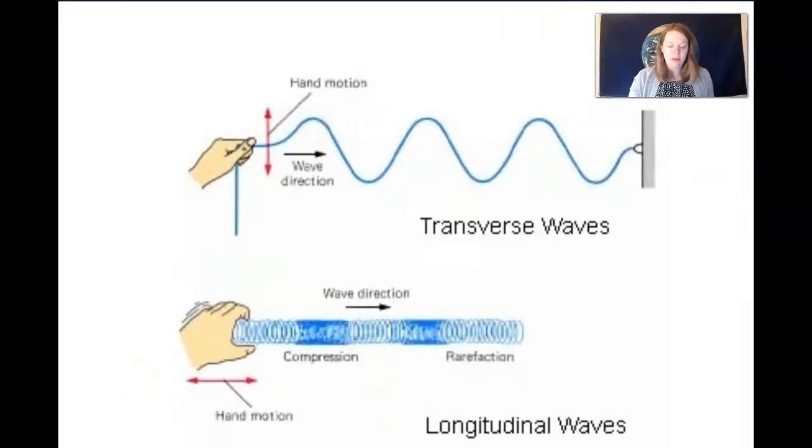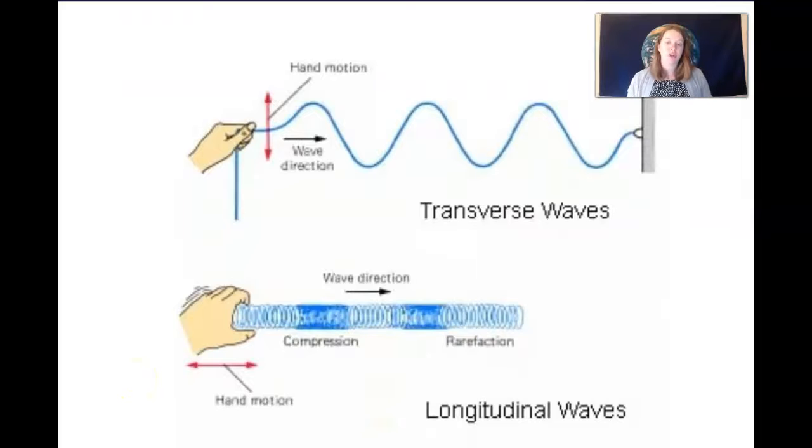So there's two types of waves. There's what are called transverse waves and longitudinal waves. And a transverse wave is when the particle moves up and down and the energy moves kind of side to side.